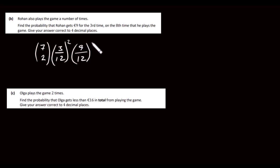So 7 minus 2 is 5. So this is the probability that he gets 9 euros twice in the first seven goes, and then on the eighth go, he must get 9 euros. So you just multiply it by 3 over 12. So this is, when you do this to four decimal places, this is 0.0779. That's it.